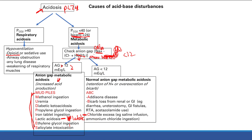So Addison's disease — deficiency of the adrenal cortex, giving you deficiency in cortisol and aldosterone. Aldosterone normally helps you reabsorb sodium and then excrete H+ in the kidney tubules. If you have Addison's disease, this doesn't happen — you retain H+ in the blood. Too much H+ in the blood gives you an acidosis, and since it's in the kidneys, it's a metabolic acidosis.